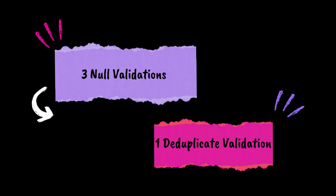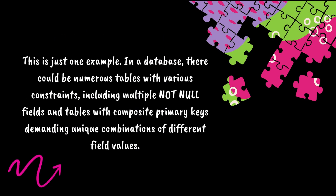So if we have to build an ETL pipeline to load data into this table, we need to perform three null validations and one deduplicate validation to identify the valid records before loading the data into the Employee table. In a database, there could be numerous tables with multiple not null fields and with various constraints. There would also be tables with composite primary keys, requiring a unique combination validation of different field values within that table.